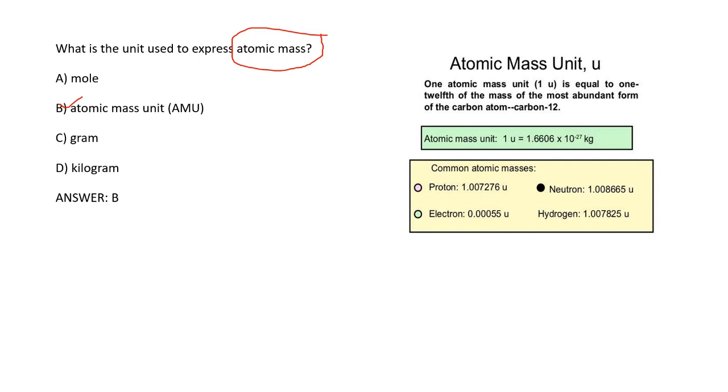What is the unit used to express atomic mass? The right option is B, atomic mass unit (AMU). Atomic mass unit is basically calculated by taking carbon-12 isotope as reference. One atomic mass unit is 1/12th of the mass of carbon-12, which is nearly 1.666 × 10^-27 kg. So option B is the right answer, atomic mass unit.